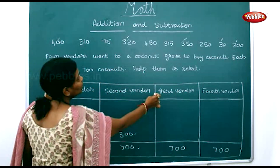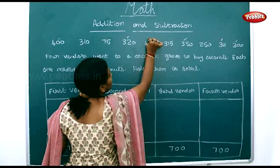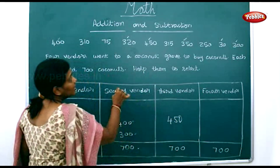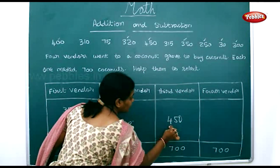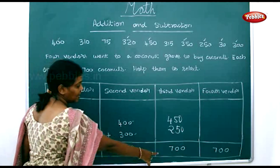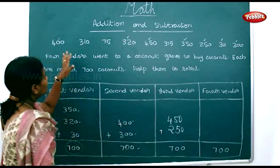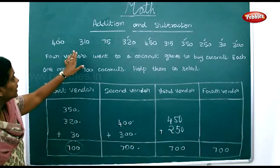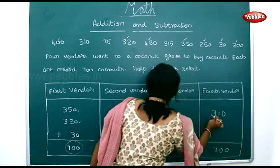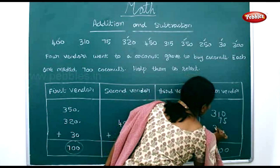Now we're going to form 700 coconuts by picking out the remaining numbers. The third vendor picked up 450 coconuts and 250 coconuts to form 700 coconuts. For the fourth vendor, it would be 310 plus 75 plus 315.